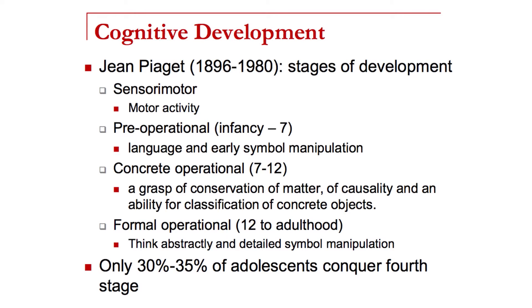One interesting thing Kramer mentions from the Piaget study is that only 30% to 35% of adolescents or even adults conquer this fourth stage — and this is where the ability to do abstraction lies. So the ability to abstract is something that some people may not actually attain. A side issue for this course is how you teach this and whether it can be learned if it wasn't acquired in prior times.